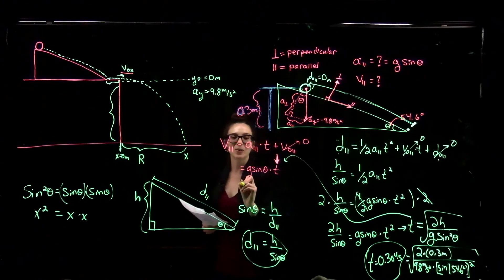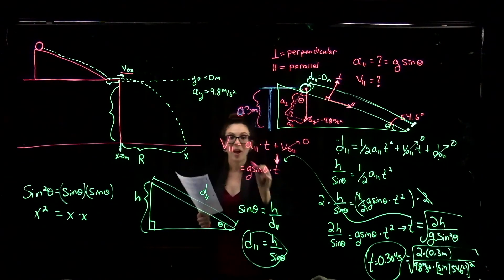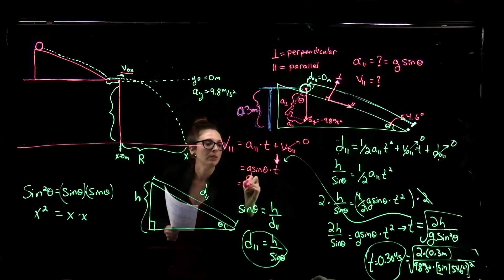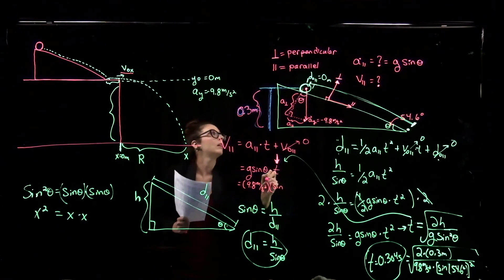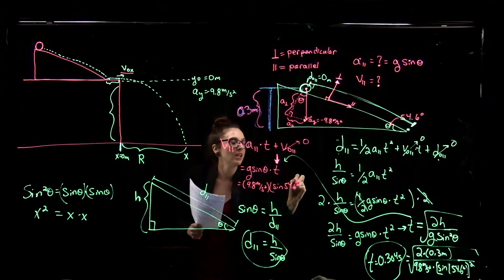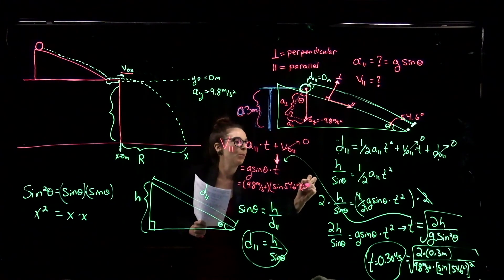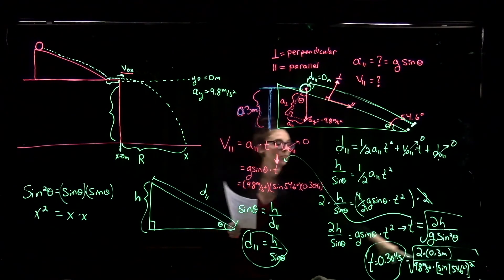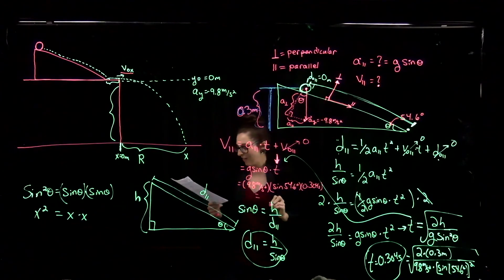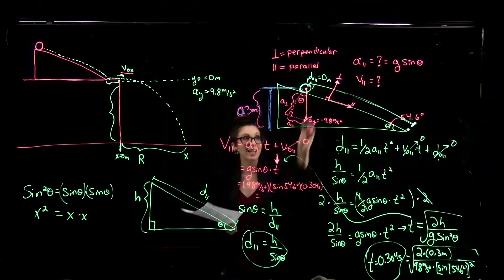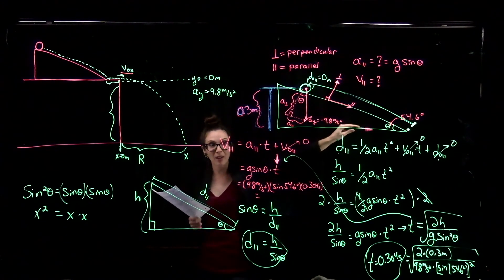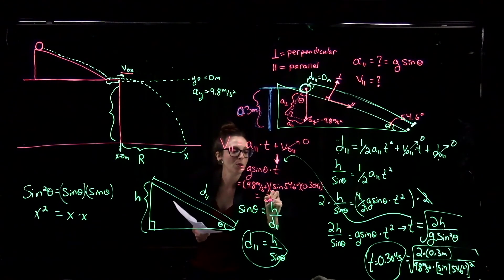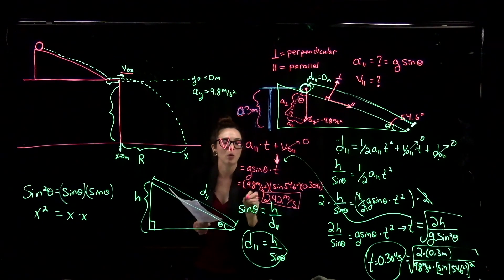Now we substitute T back in. The velocity parallel to the plane equals 9.8 meters per second squared times sine of 54.6 degrees times 0.304 seconds. Plugging all that in, the final velocity when the object reaches the bottom of the inclined plane is 2.42 meters per second.